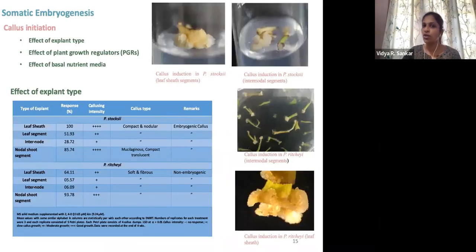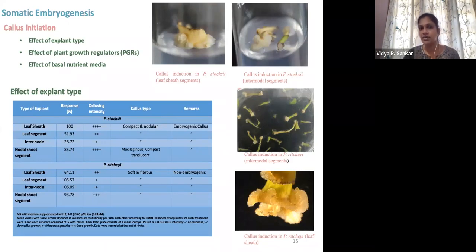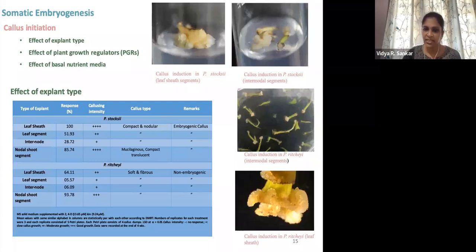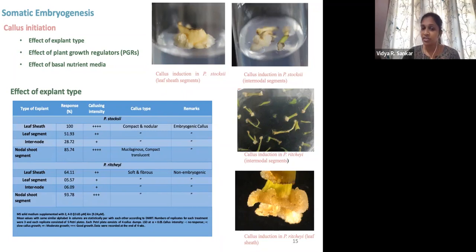We then tried somatic embryogenesis and carried out a lot of experiments in all steps. For callus initiation, we tried different types of explants, different types of plant growth regulators, and different basal nutrient media. For explant type, we used leaf sheaths, leaf segments, internodes, and internode segments from axillary bud sprouts. We got a very good compact and nodular callus from leaf sheaths for stocksii. But for ritchiei, soft and fibrous callus is obtained from most experiments. For monocots, especially in bamboo, this fibrous callus is non-embryogenic.